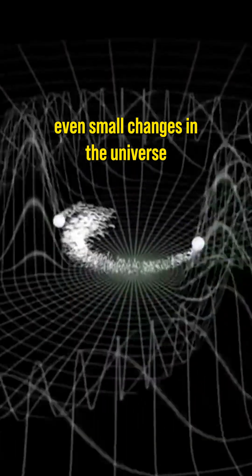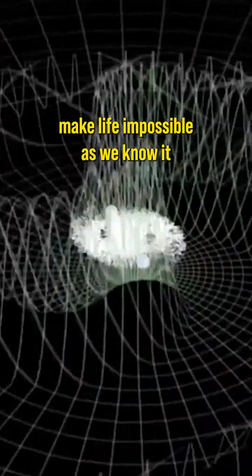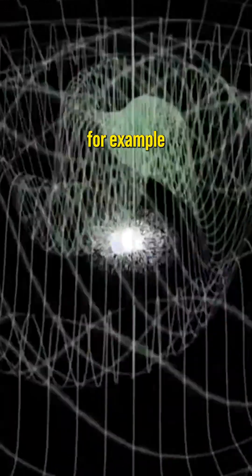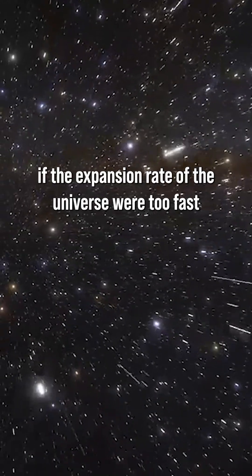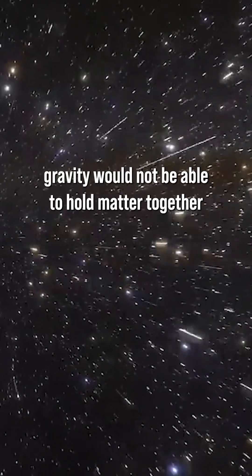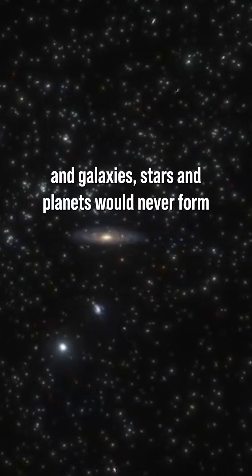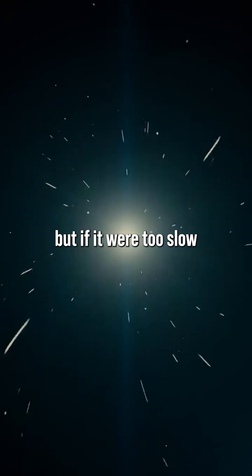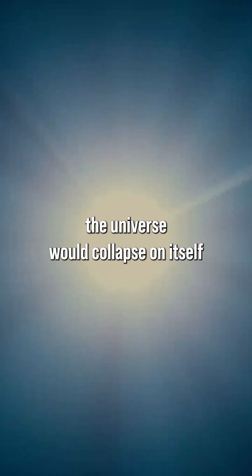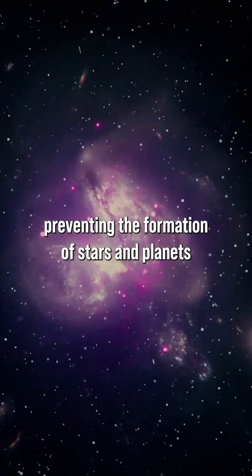As such, even small changes in the universe could potentially make life impossible as we know it. For example, if the expansion rate of the universe were too fast, gravity would not be able to hold matter together and galaxies, stars and planets would never form. But if it were too slow, the universe would collapse on itself, preventing the formation of stars and planets.